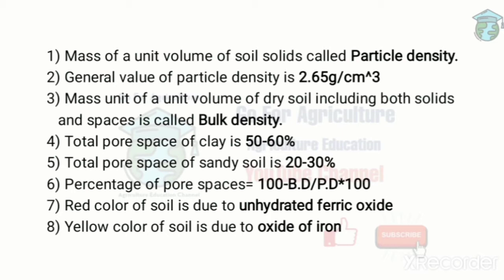The red color of soil is due to unhydrated ferric oxide. Yellow soil color is due to oxide of iron — yellow color soil is more moist than red color soil. Soil color directly influences soil temperature.